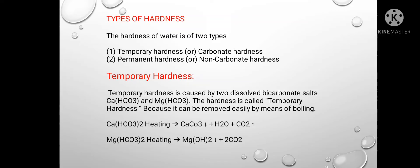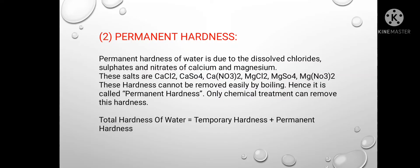Permanent hardness of water is due to dissolved chlorides, sulphates, and nitrates of calcium and magnesium. These salts are CaCl₂, CaSO₄, Ca(NO₃)₂, MgCl₂, MgSO₄, and Mg(NO₃)₂. This hardness cannot be removed easily by boiling, hence it is called permanent hardness. Only chemical treatment can remove this hardness. Total hardness of water equals temporary hardness plus permanent hardness.